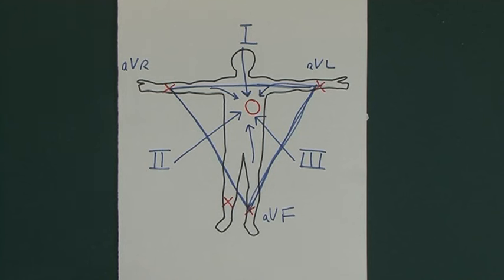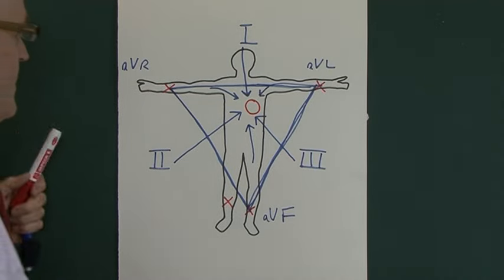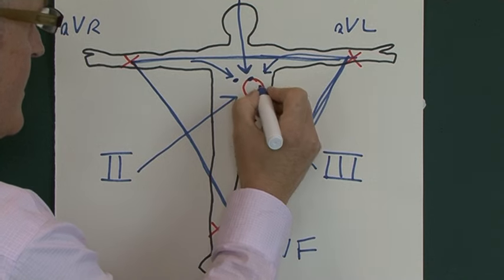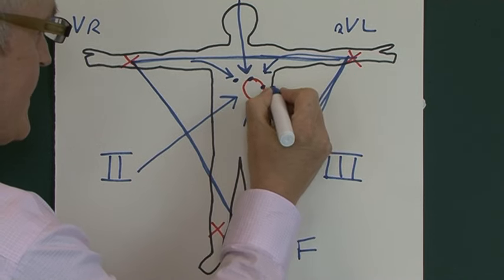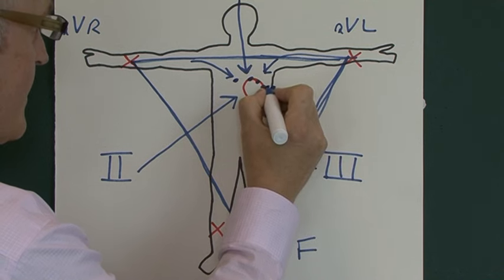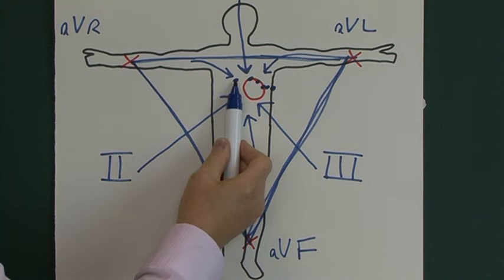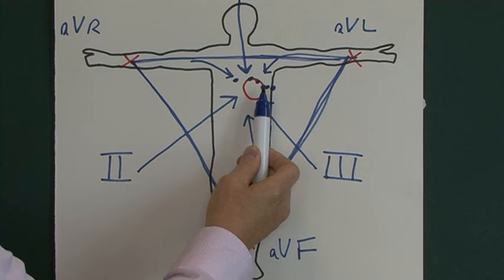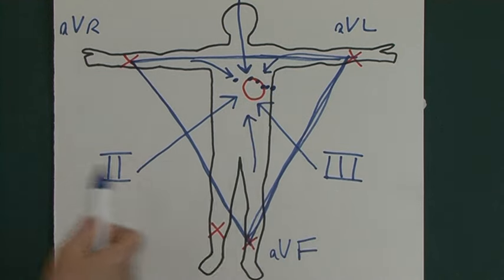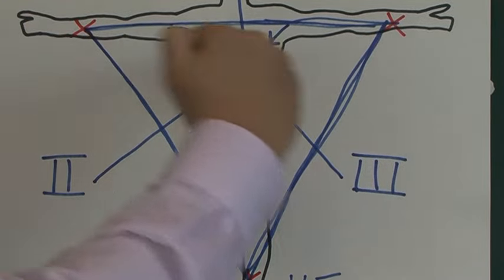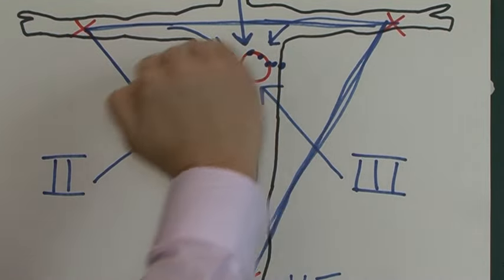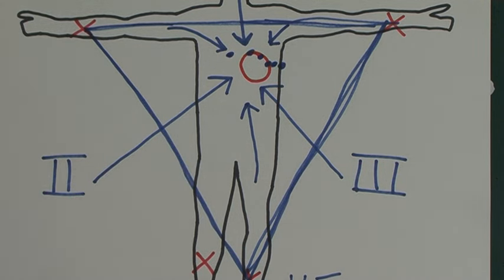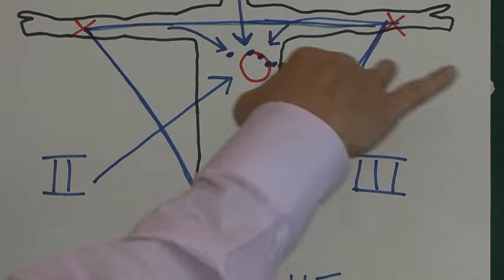Then of course we've got six chest leads: V1, V2, V3, V4, V5, and V6. These are looking at the heart from a plane going around the heart. The limb leads - leads one, two, three, AVR, AVL, and AVF - are looking at the heart in the frontal plane. The chest electrodes, V1 through V6, are looking at it in the horizontal plane.